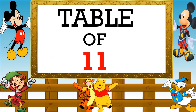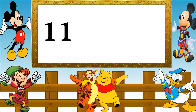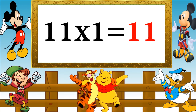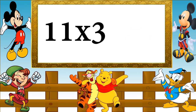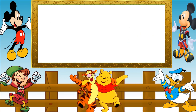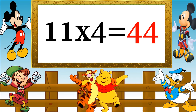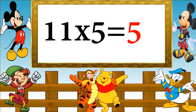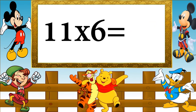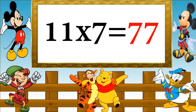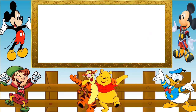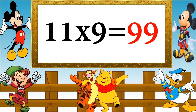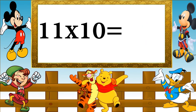Table of 11. 11 ones are 11, 11 twos are 22, 11 threes are 33, 11 fours are 44, 11 fives are 55, 11 sixes are 66, 11 sevens are 77, 11 eights are 88, 11 nines are 99, 11 tens are 110.